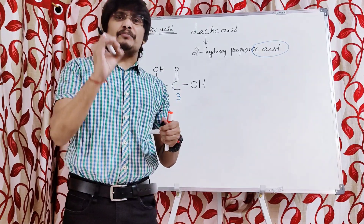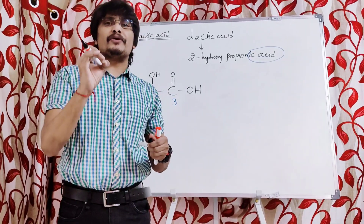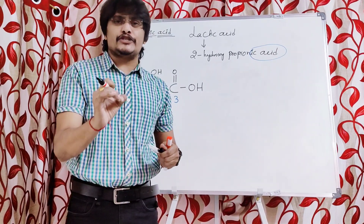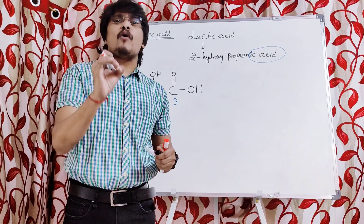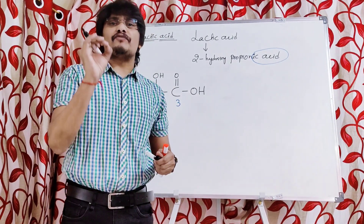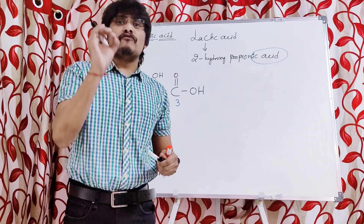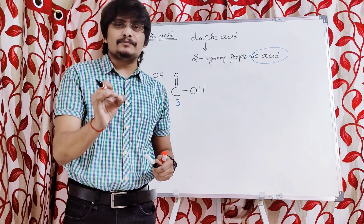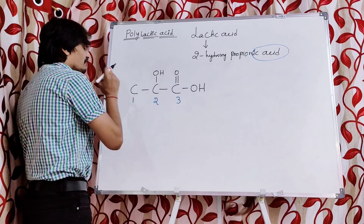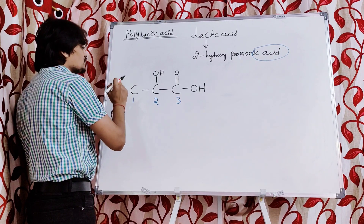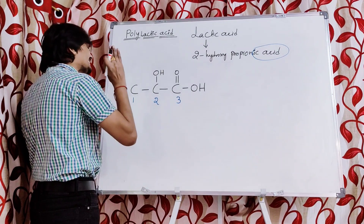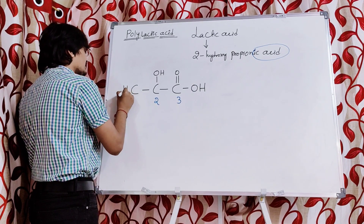In order to get the full structure from the basic skeleton of 2-hydroxy propionic acid, we need to satisfy the valency of each and every carbon. The valence of carbon is 4, so we must ensure four bonds around each carbon. At the first carbon, only one bond is present, so it is lacking three bonds — we place three hydrogen bonds.